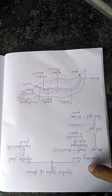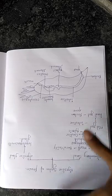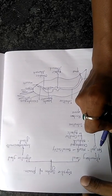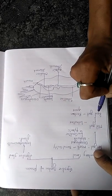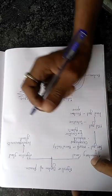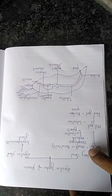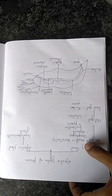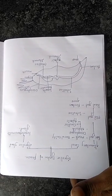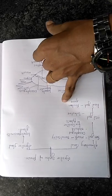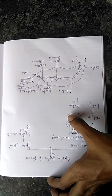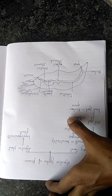The alimentary canal is divided into foregut, midgut and hindgut. The foregut is ectodermal in origin and hindgut is also ectodermal in origin, and both consist of cuticles. The midgut is endodermal in origin and consists of glandular cells.